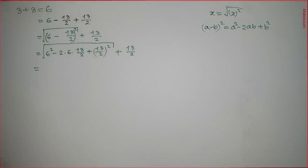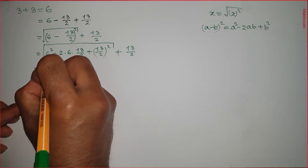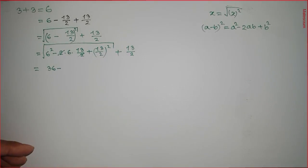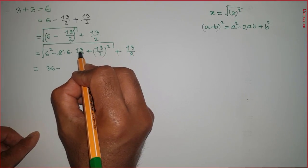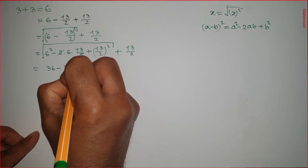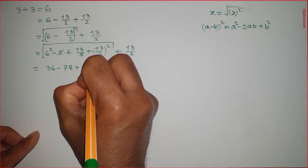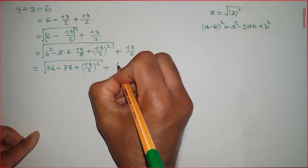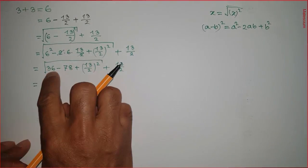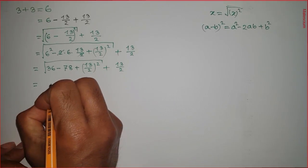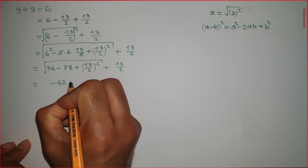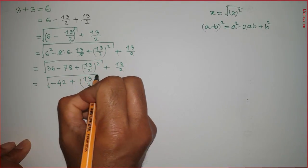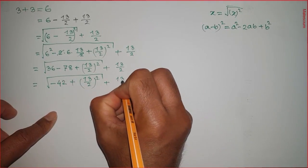Now, doing a simplification: 6 squared means 36. The two 2's cancel each other, and 6 times 13 equals 78, plus (13/2) whole square, all covered by the square root, plus that 13 over 2 remaining exactly the same. So we have 36 minus 78, which equals minus 42, plus (13/2), under the square root, plus 13 over 2, remaining the same.